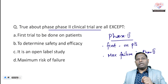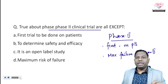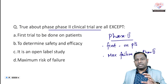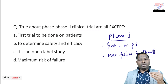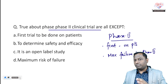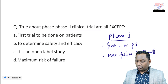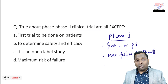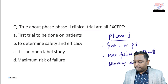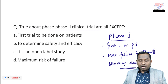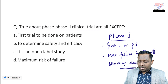So maximum rate of failure mainly occurs in Phase 2. If 100 drugs are rejected in a year, about 75 of them are mainly rejected in Phase 2 — though rejection can occur in other phases too. Apart from that, it is not an open-label study. Remember, blinding is done here to remove bias.